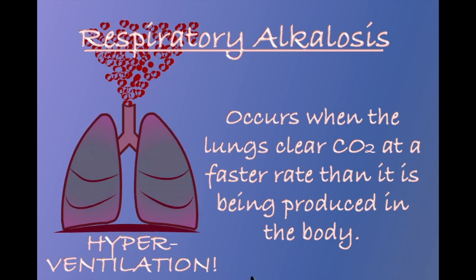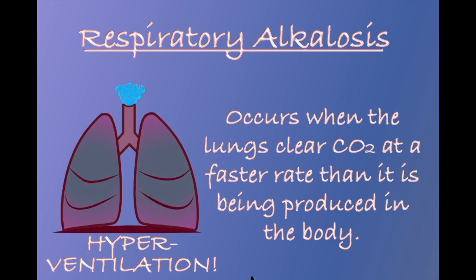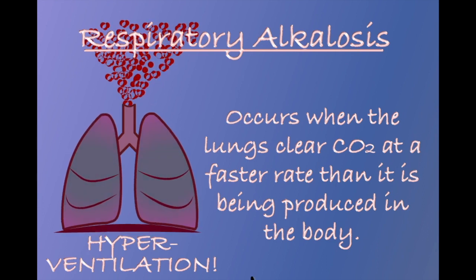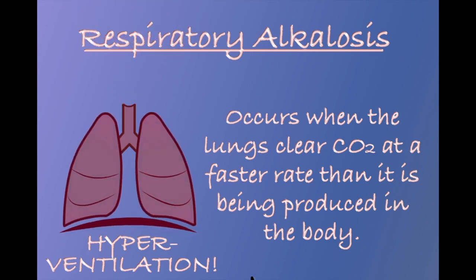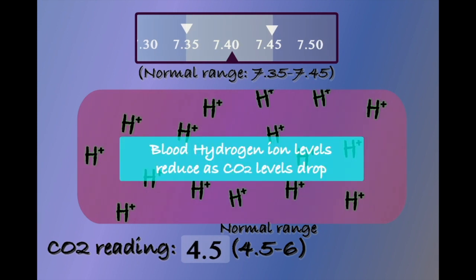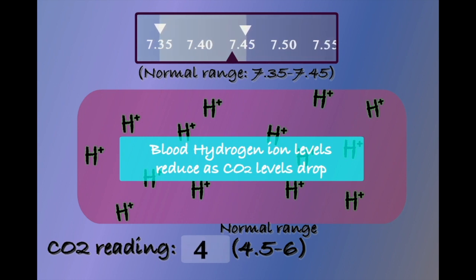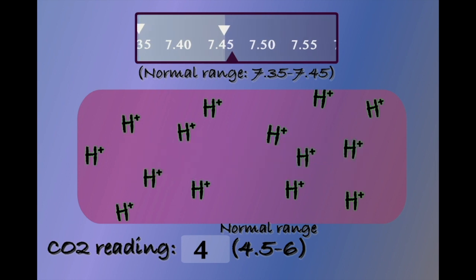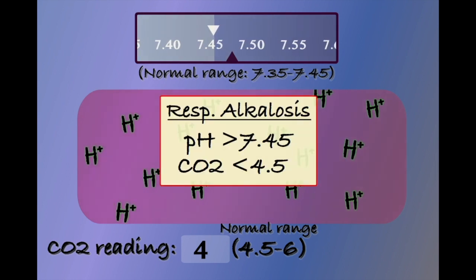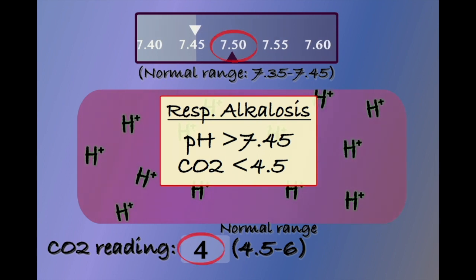The body can also experience problems if the respiratory system is too efficient. Hyperventilation may result in CO2 being cleared too efficiently. The body is designed to operate in the presence of some CO2, and respiratory alkalosis will occur if CO2 levels fall below the optimum range. As CO2 levels reduce below 4.5 kilopascals, the concentration of hydrogen ions will also reduce. pH may increase into the alkalotic range.